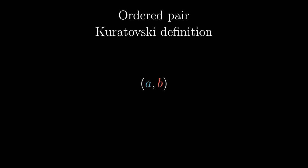The formal pair A, B is defined as follows. We pack A into a singleton set and then we create another set out of A and B. The ordered pair is a set containing these two sets.